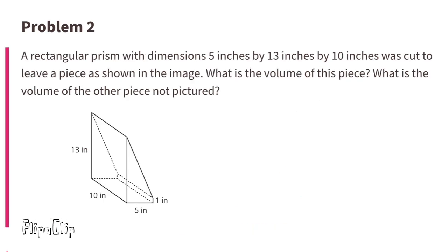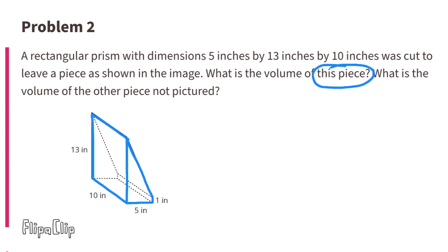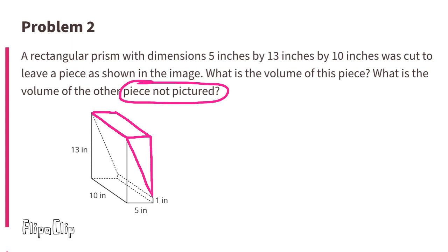Problem number 2. A rectangular prism with dimensions 5 inches by 13 inches by 10 inches was cut to leave a piece as shown in the image. What is the volume of this piece? What is the volume of the other piece not pictured? The piece not pictured is going to have a slightly smaller volume compared to the piece pictured. The difference in volume for these two pieces is represented here in blue.